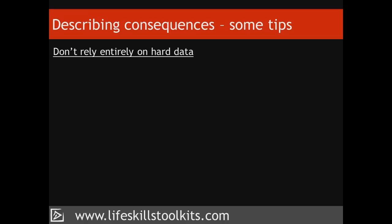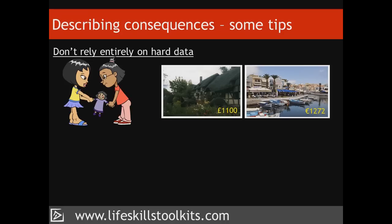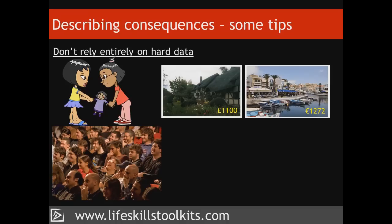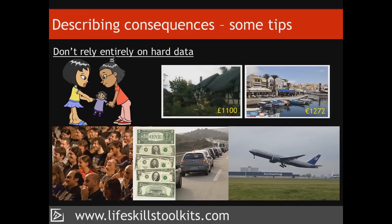Second: don't rely entirely on hard data. When identifying consequences, what you describe is either subjective or objective in nature. The Petersens' children's happiness is a subjective consequence, while spending £1,100 on the holiday cottage and £1,000 on a holiday to Crete are objective consequences. While it's important to be as objective as possible, don't discount the importance of subjective consequences. For instance, when deciding whether to accept a job offer, being able to assess how much you'll enjoy it is equally as important as comparing remuneration packages or travel times. For the Petersens, the children having fun is of equal importance to cost and duration.